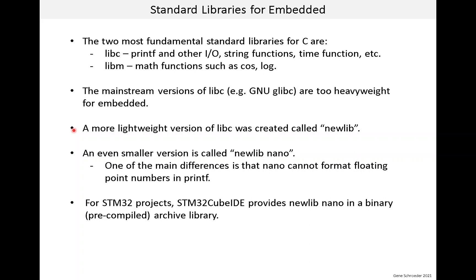I have to say that is not a great name to give to a library, but that's what they chose. Even NewLib was not small enough for some really small systems, and so there is a variation called NewLib Nano. One of the most visible differences with Nano is it can't format floating point numbers in functions like printf. It doesn't sound like a big deal, but it adds up — and probably a lot of very small systems don't use floating point anyway.